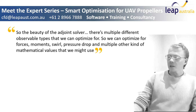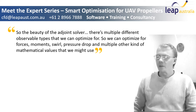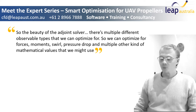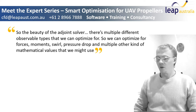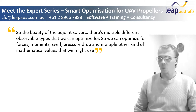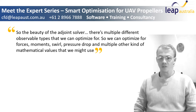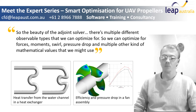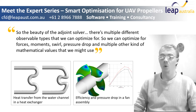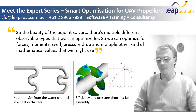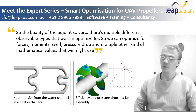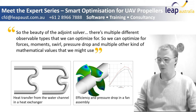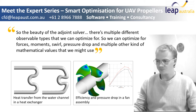The beauty of the adjoint solver is that there are multiple different observable types that we can optimize for. We can optimize for forces, moments, swirl, pressure drop, and multiple other mathematical values that we might use.